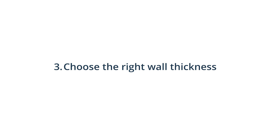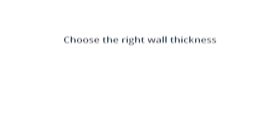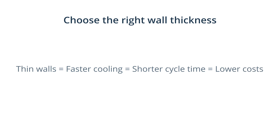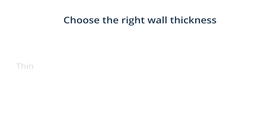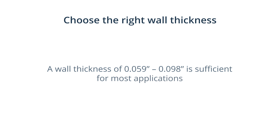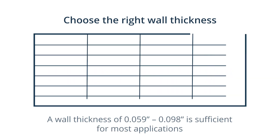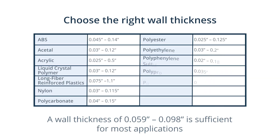3. Choose the right wall thickness. There are a few key points to consider to ensure you choose the right wall thickness. Thinner walls shorten the cycle time and lower the cost of your part. For lots of applications, a wall thickness of 1.5 to 2.5 mm is sufficient, but you can also refer to recommended wall thicknesses for different materials.